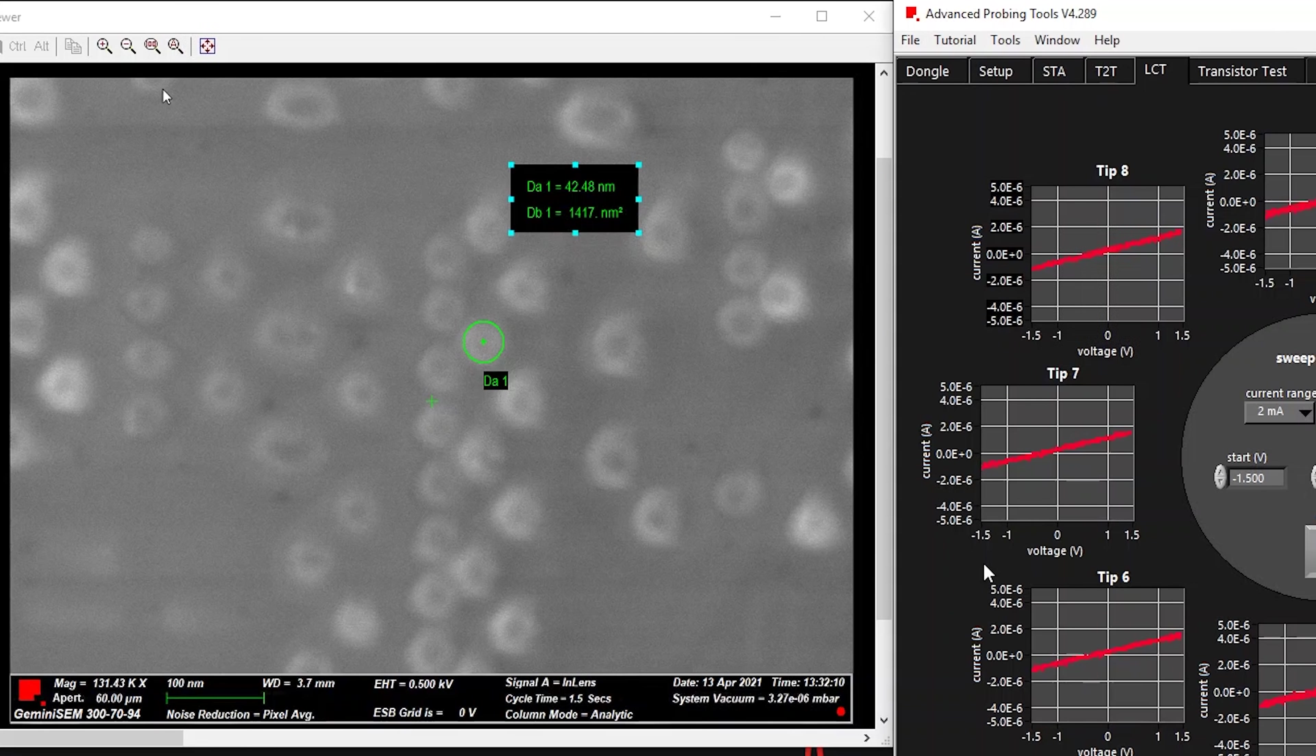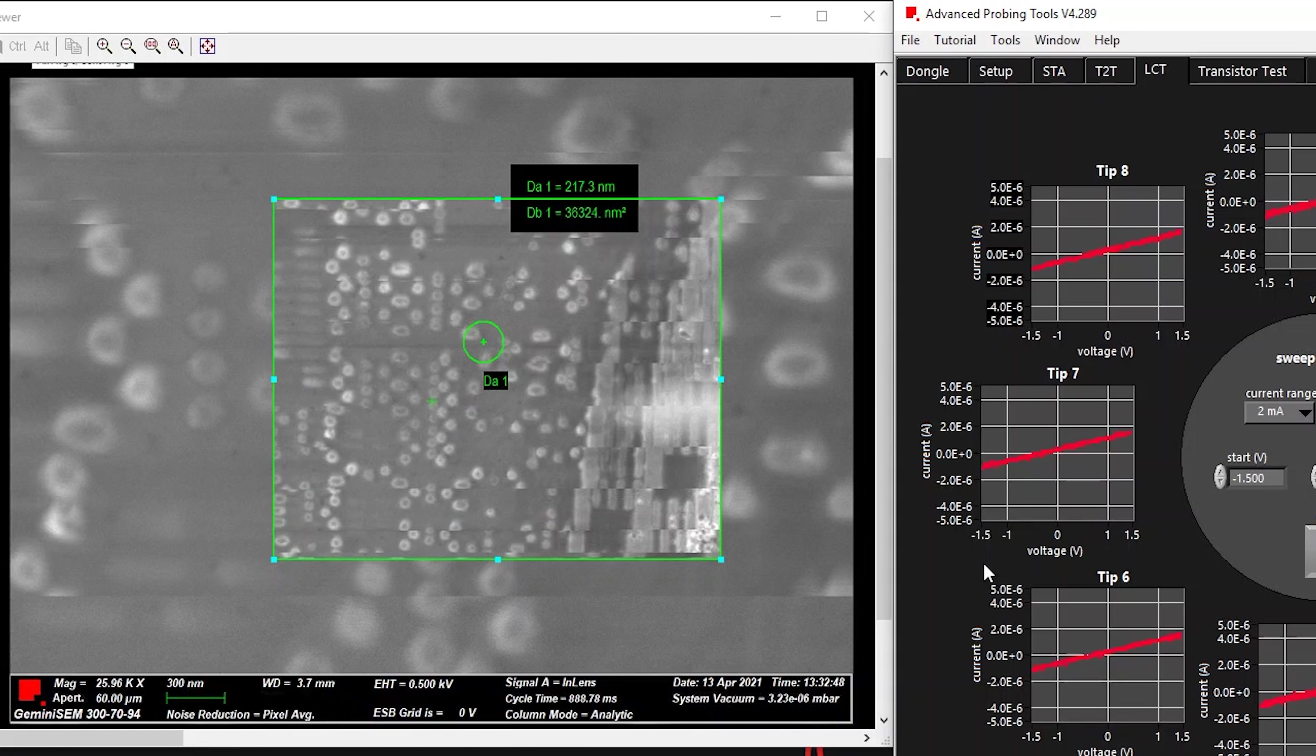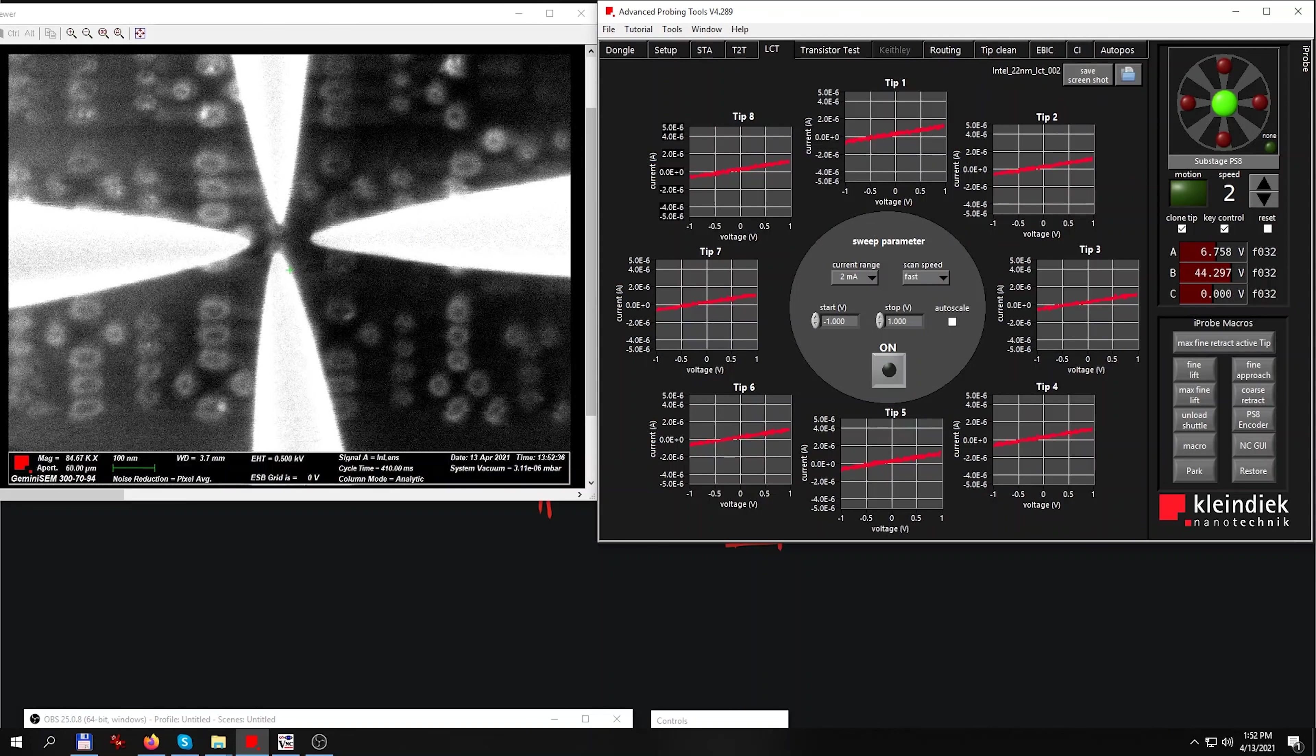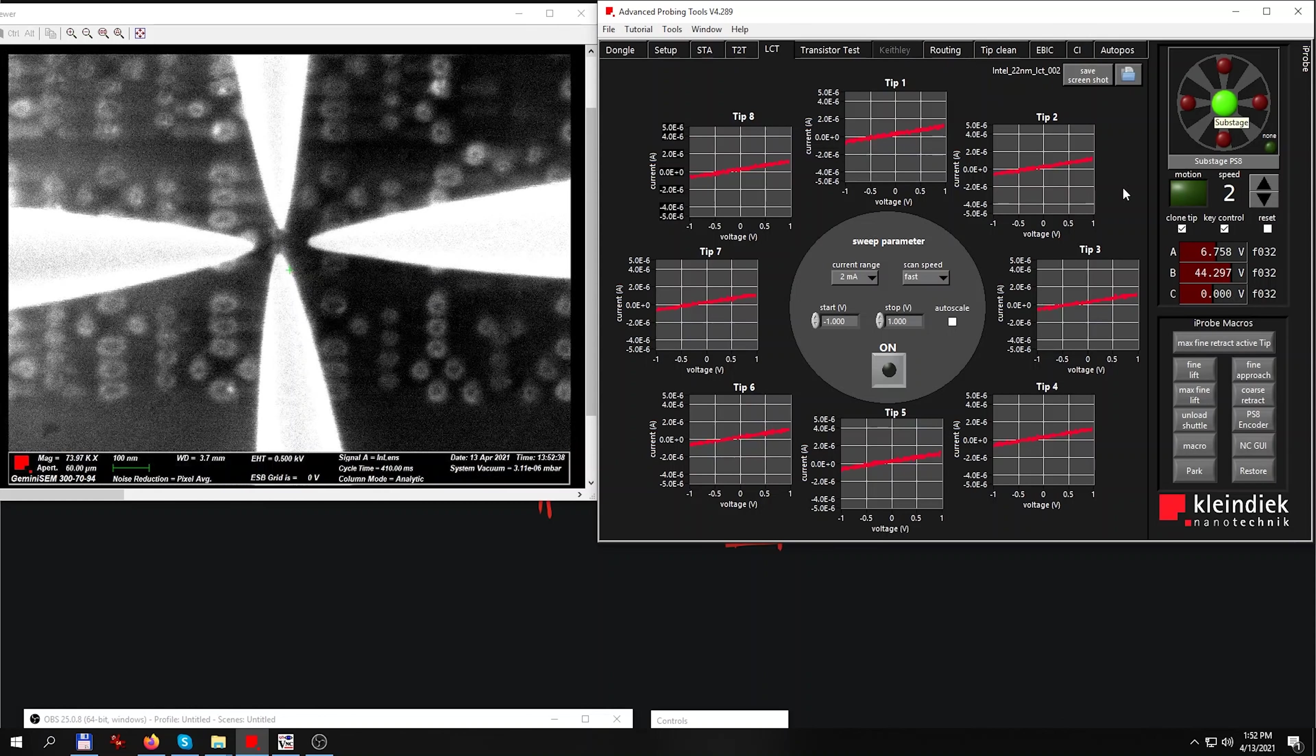Now if we just measure one of those very single contacts you can see it's about 14 nanometers, and comparing this with the human hair it's about 1500 times smaller. Now it's time to position the needles on those contact points.